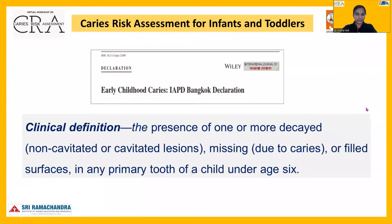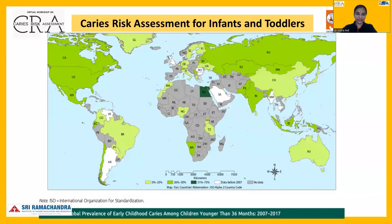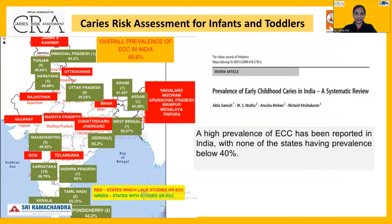As we all know, early childhood caries is the presence of one or more decayed, missing, or filled tooth surfaces in any of the primary teeth of a child under age six. The prevalence of early childhood caries across the globe varies from less than 10 percent to more than 80 to 85 percent.